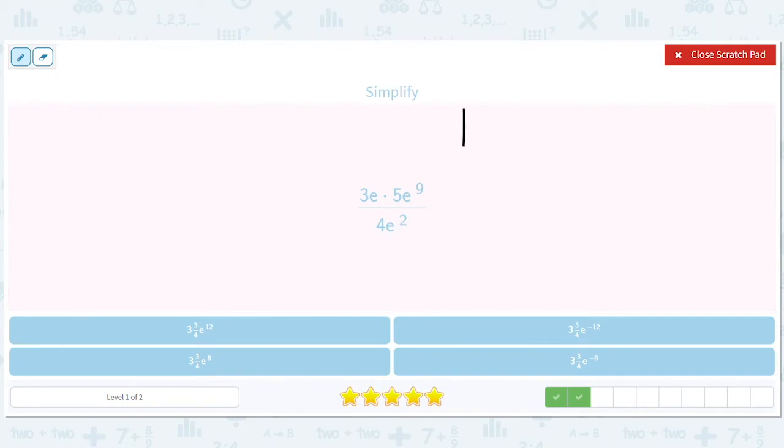All right, how about this? So we have e here. We have e to the one, there's a secret one there. Plus nine equals ten. And on the bottom, we have a two equals two. So that's going to give us an eight. Ten minus two is eight.